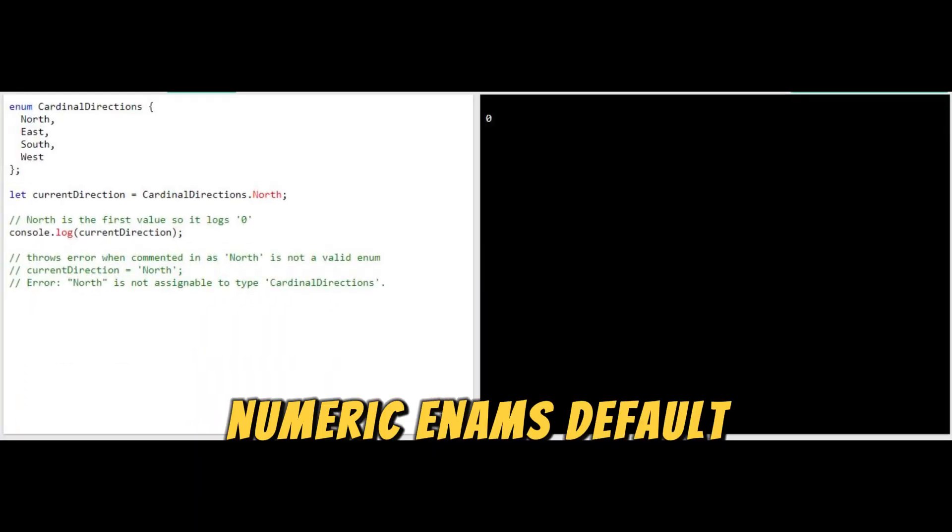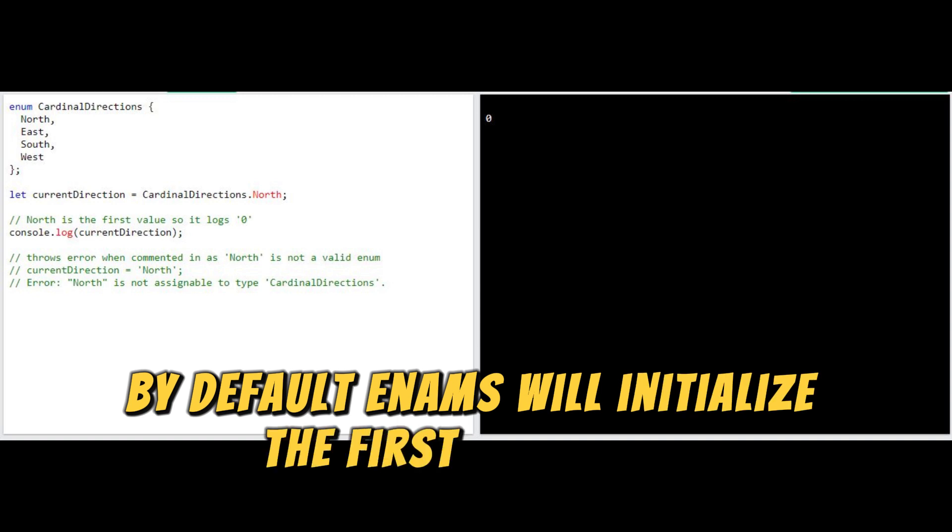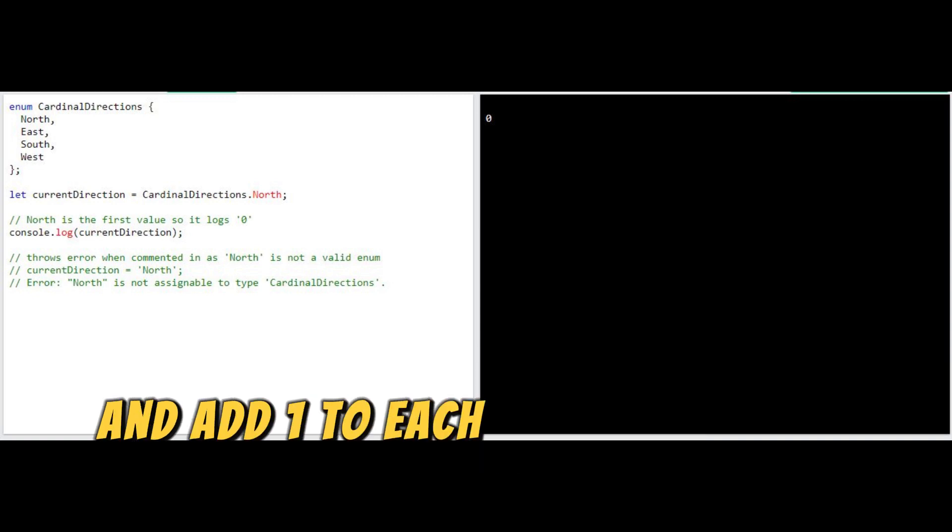Numeric enums - default. By default, enums will initialize the first value to zero and add one to each additional value.